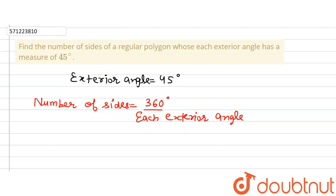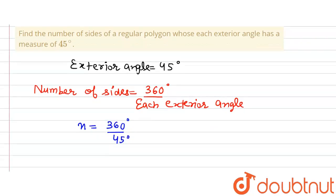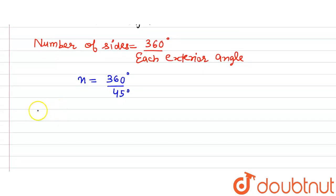So now putting in the values we will get number of sides, let's denote it by n, is equal to 360 degree divided by external angle is 45. On solving it we will get 45 multiplied by 8 is 360 degree. So n will be equal to...